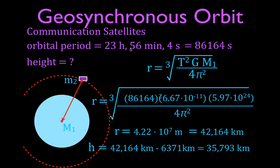That is the height needed to achieve this orbital period — 35,793 kilometers. If we have this orbital period, then we have a geosynchronous orbit, and if we place that orbit at the equator, we'll have a geostationary orbit and the satellite will always stay above the same place. This height is also equal to 22,236 miles.